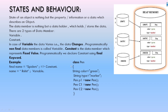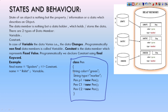Let us see the class Pen: String color = 'green', String type = 'marker'. This is how we are going to initialize one particular object. In class Pen we have initialized two states — one is color, one is type — both of data type String. So 'green' and 'marker'. This is called object creation and direct initialization.